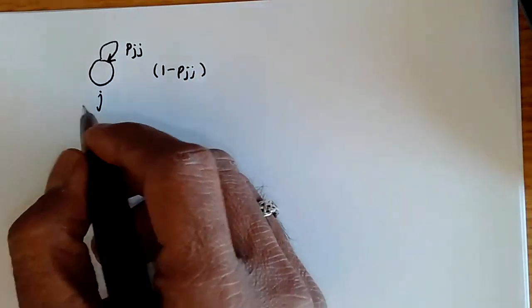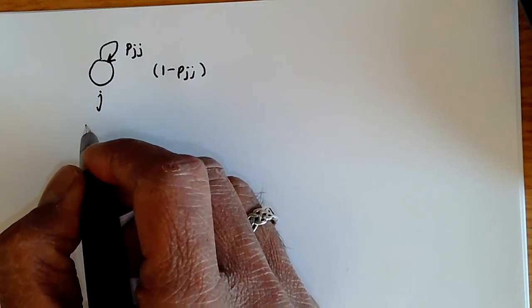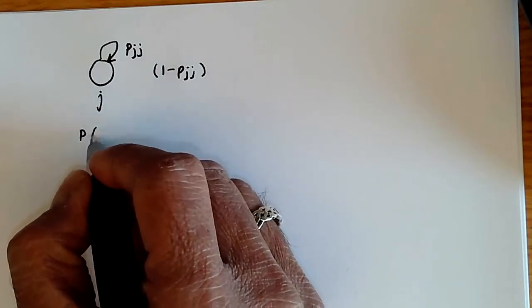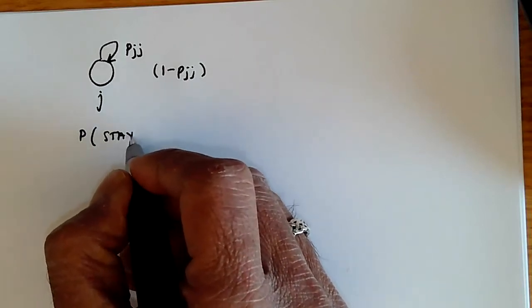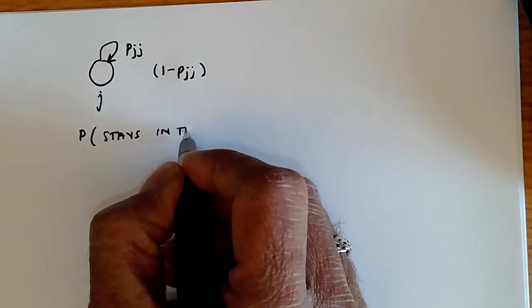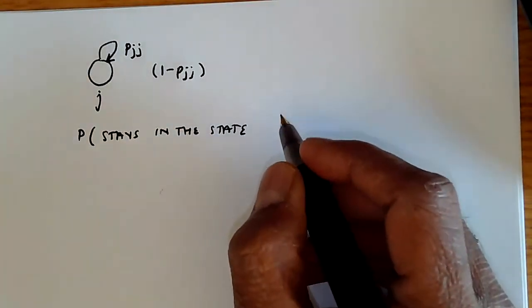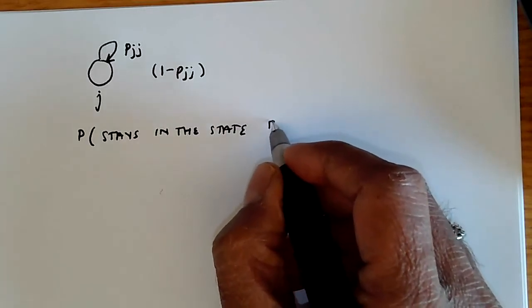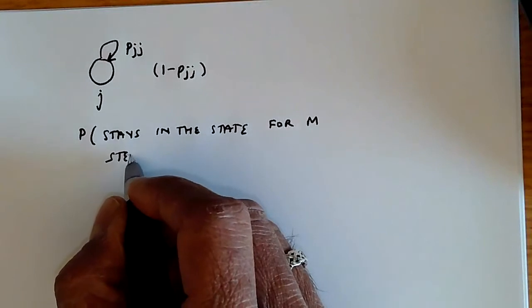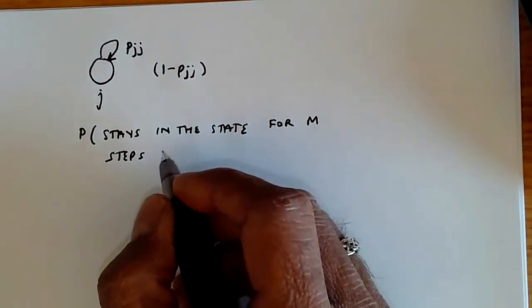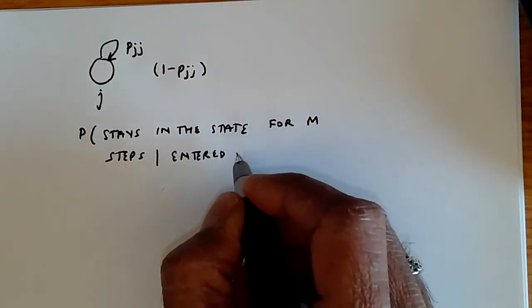Then, this duration can be computed by first obtaining the probability that the system stays in the state for m additional steps, given that it just entered state j.